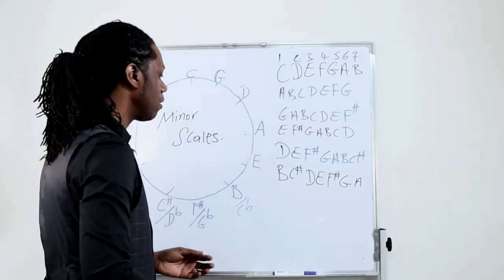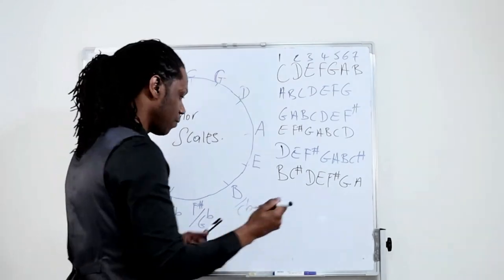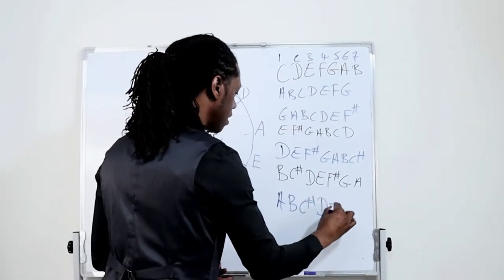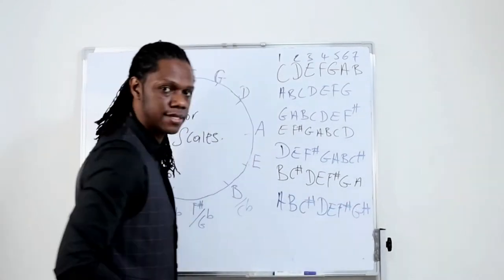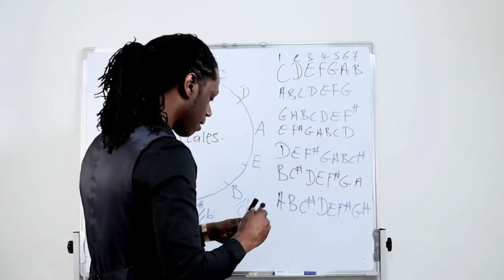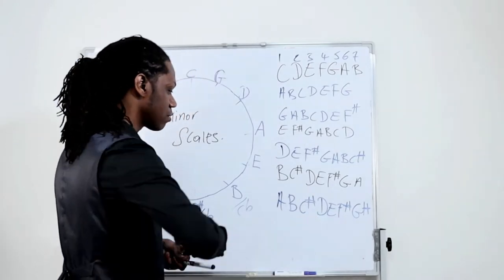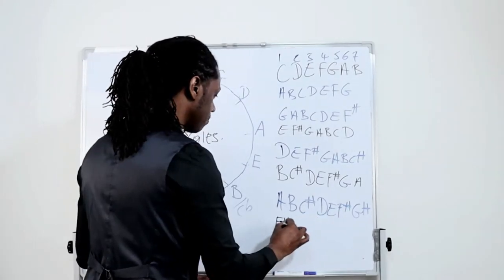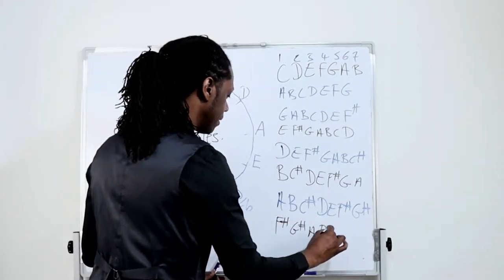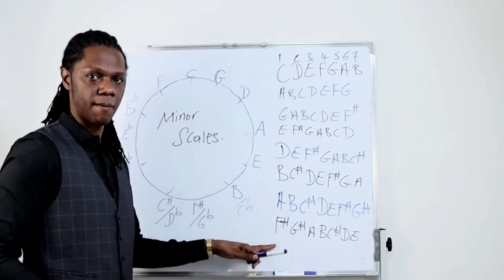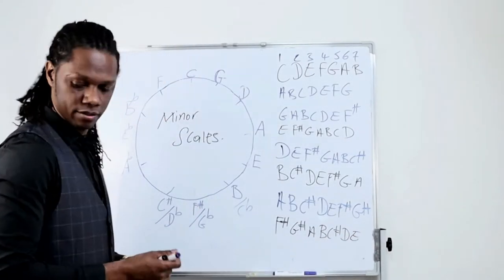How about A? We have A, B, C sharp, D, E, F sharp, and G sharp. The sixth degree is going to be F sharp. So you go F sharp, G sharp, A, B, C sharp, D, and E. And that's your F sharp natural minor.